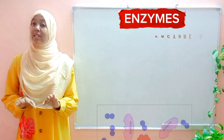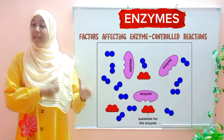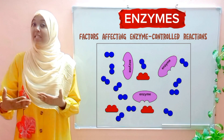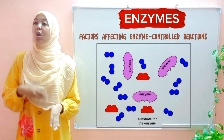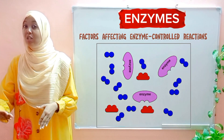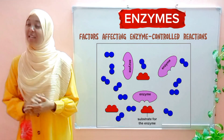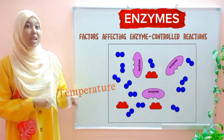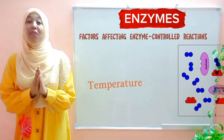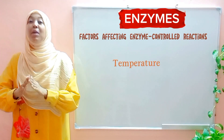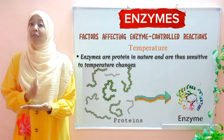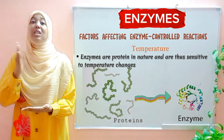When we talk about factors that affect reactions controlled by enzymes, we simply refer to factors that affect enzymes either directly or indirectly, which will in turn affect the reactions they catalyze. Our first factor is temperature. Temperature affects enzymes because enzymes are made from proteins, and anything that consists of proteins will be affected by changes in temperature.